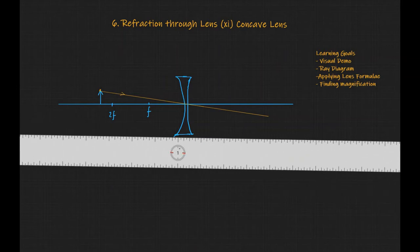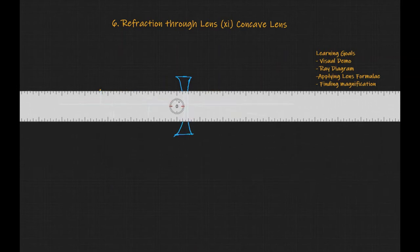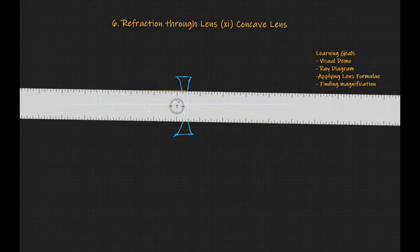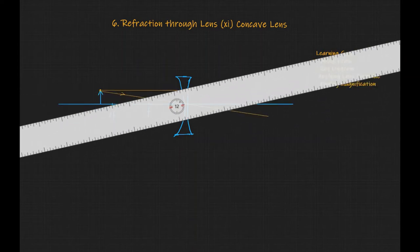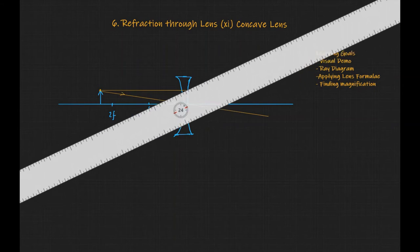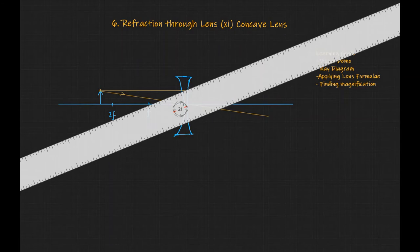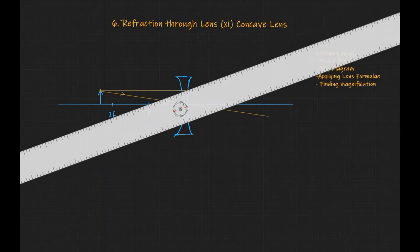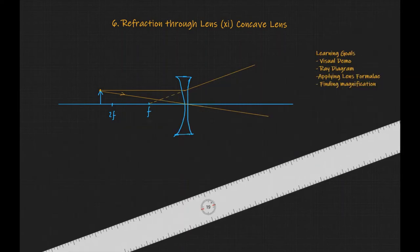Once we have that let's draw a ray parallel to the principal axis. This ray exits such that if you extend it, the diverging beam passes through the focus. So we apply the rules of the ray diagram here. So this is how the rays will go out and let's extend this a little bit. So this will be our ray diagram.